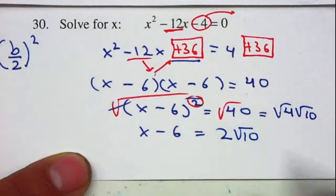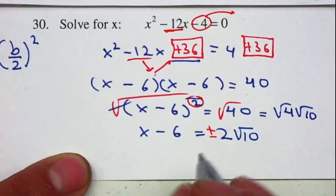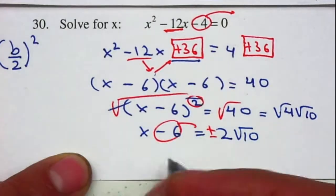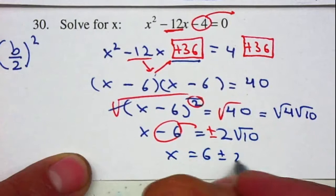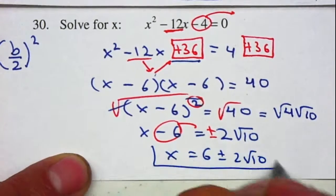Don't forget about the plus or minus. The last step is to move the negative 6 to the right by adding 6 to both sides, giving x = 6 ± 2√10. That's your answer.